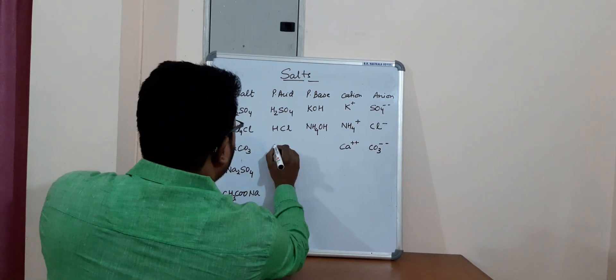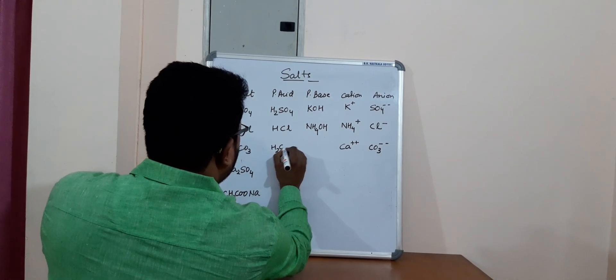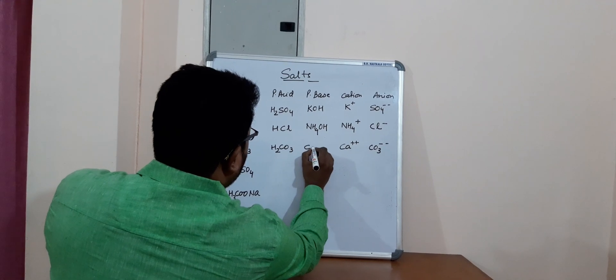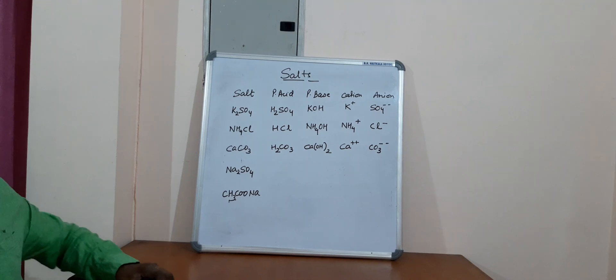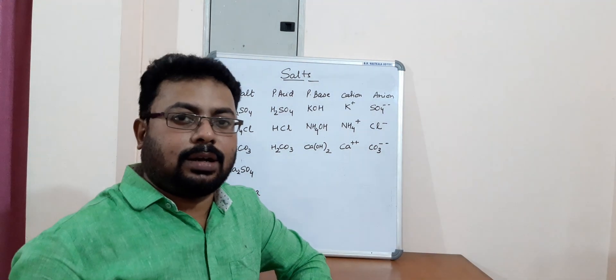So the carbonate anion comes from acid, so carbonic acid, and cation is calcium hydroxide. Calcium hydroxide.